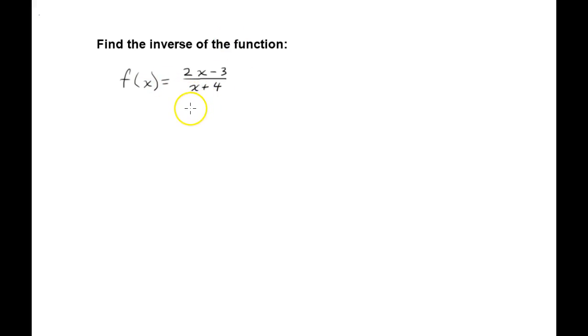I like to swap the x and y right away. So this is like y equals 2x minus 3 over x plus 4. So I'm going to put x right here equals 2y minus 3 over y plus 4. And then I'm going to solve for y, and that function that is equal to y is the inverse function.